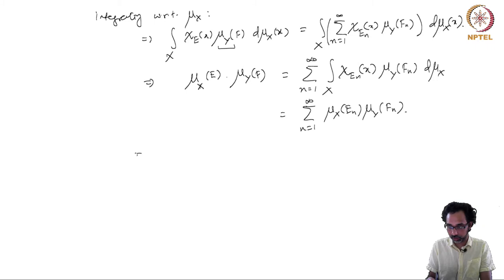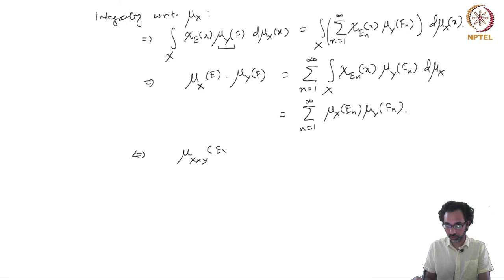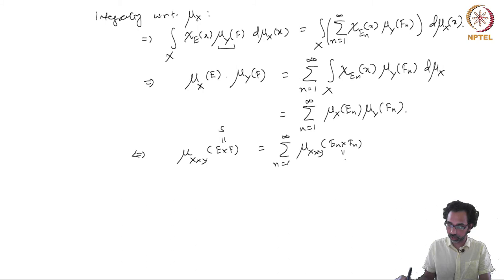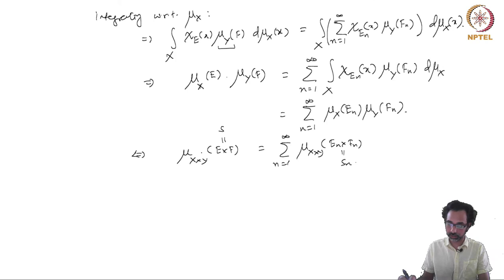Since S was chosen to be E × F, on the left hand side we have μ_{X×Y}(E × F), and on the right hand side we have the sum n equal to 1 to infinity of μ_{X×Y}(E_n × F_n), which were all the S_n's. So we have shown that this formula holds when the S_n's and S all have this simple elementary product form.